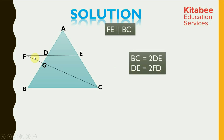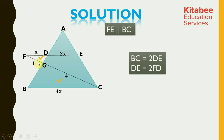If we say that FD is equal to X units, then DE would be equal to 2X units and BC would be equal to 4X units. If we consider triangle FDG and triangle BGC, then FD is parallel to BC, which means both these triangles must be similar to each other. The ratio of FD to BC is 1 to 4, so all the sides must be in the ratio of 1 to 4.